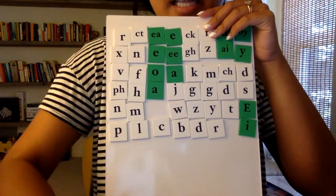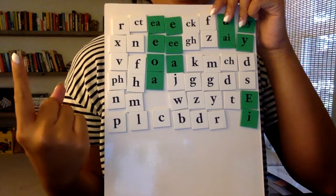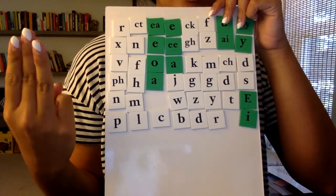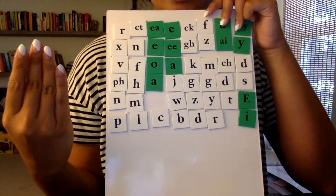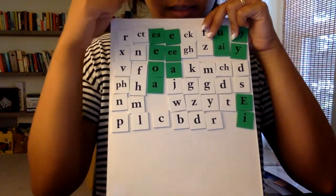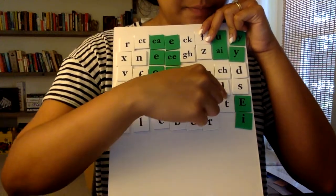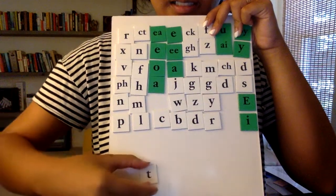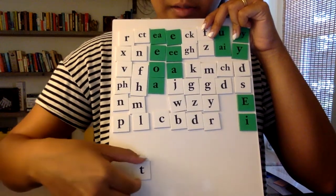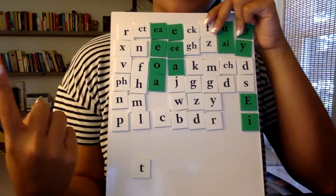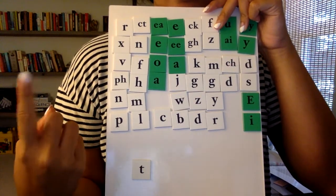Let's think back again. What are the sounds that we hear in trim? T, R, I, M. T is the first sound that I hear, so I'm going to look for the letter that says T and that is a T. And remember, we read from left to right, so that's the first sound that's going to go over here.